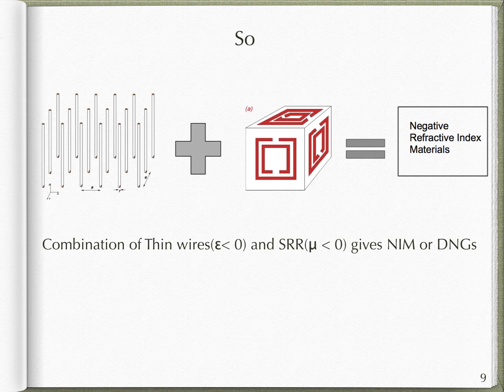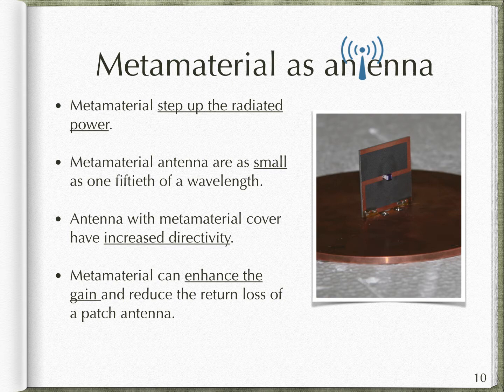Using metamaterial as an antenna has the following advantages: it steps up the radiated power, it is small in size, it has increased directivity, it can enhance the gain, and it reduces the return loss of the patch antenna. These advantages will be further discussed in the next slide.